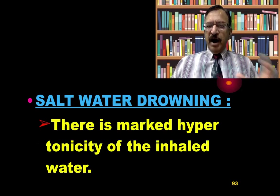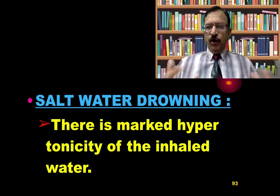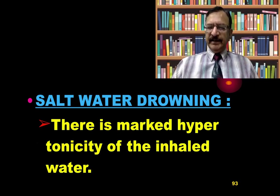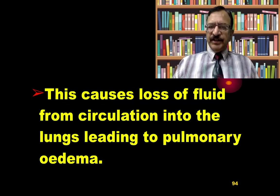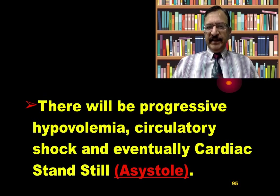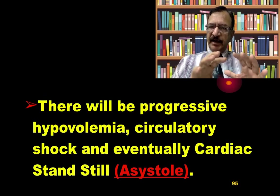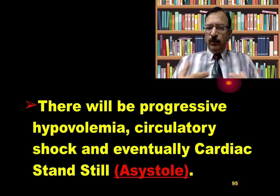In salt water drowning, there is marked hypertonicity of the inhaled water, as sea water contains abundant salts and is hypertonic. When that hypertonic water is inhaled, it causes loss of fluid from the circulation, extracting water from the circulation into the lungs, leading to pulmonary edema. There is progressive hypovolemia — a reduction in blood volume — leading to circulatory shock.